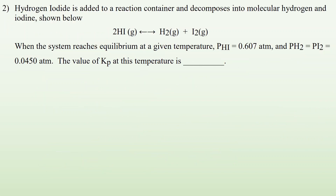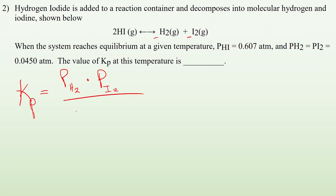Number two: hydrogen iodide is added to a reaction container and decomposes into molecular hydrogen and iodine. When the system reaches equilibrium, the pressure of HI is 0.607 atm, and the pressure of H2 and I2 both equal 0.0450 atm. What is the value for Kp at this temperature? Kp equals the pressure of H2 to the first power times the pressure of I2 to the first power, divided by the pressure of HI squared, because of the two coefficient.